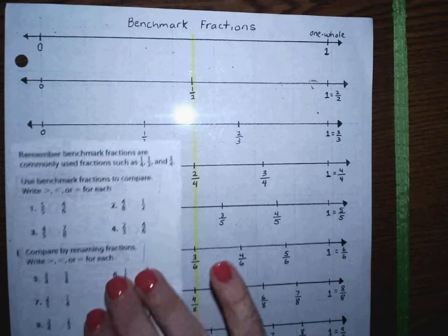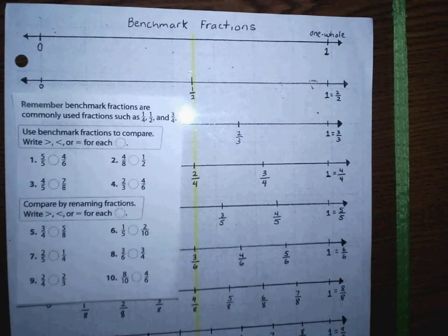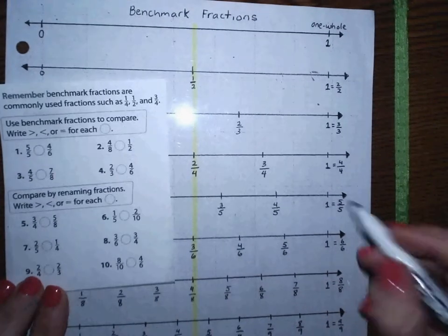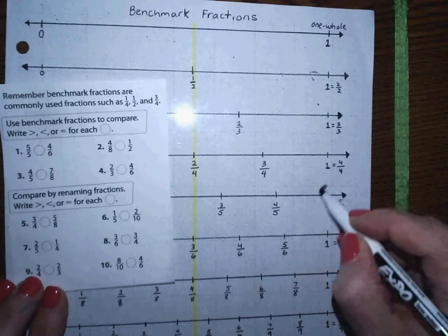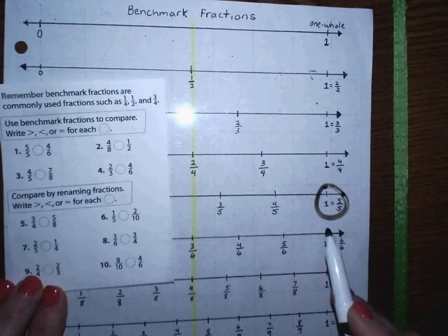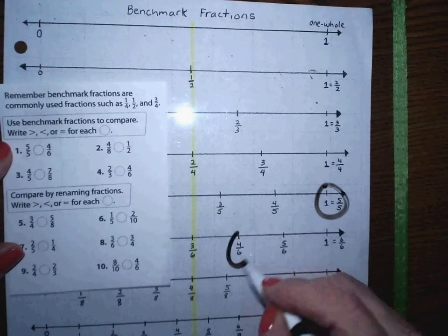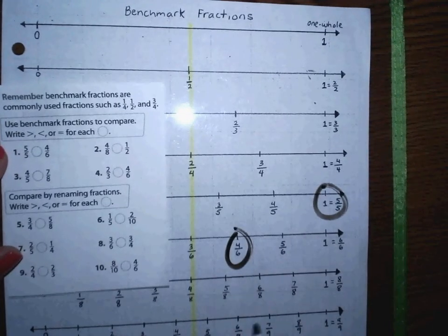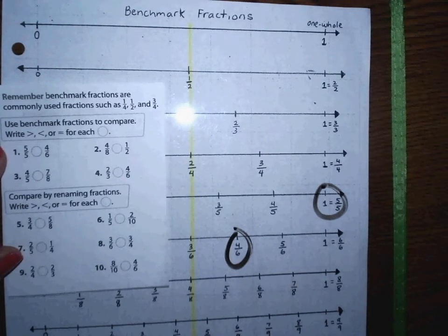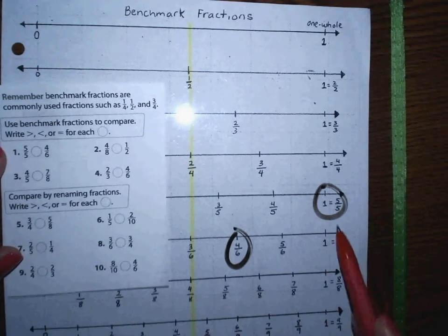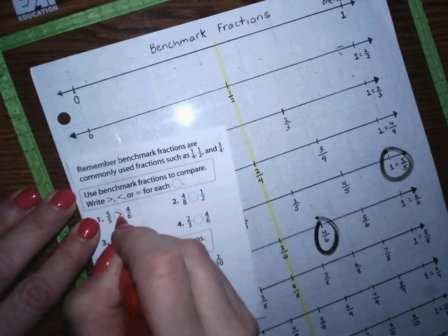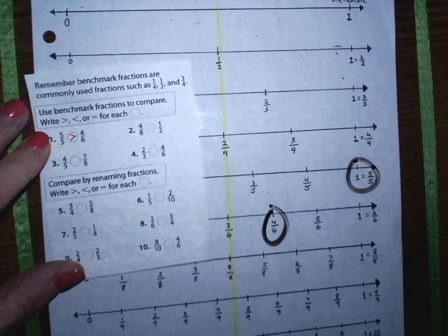If I'm comparing five-fifths and four-sixths, I'm going to circle both inside my communicator. I know five-fifths is here because it's equivalent to one whole, and then four-sixths is here. So I can see that four-sixths would be less than five-fifths, or I could also say that five-fifths is greater than four-sixths.